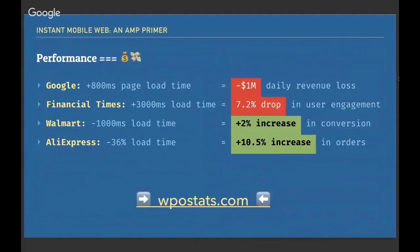Performance equals money. I encourage you to check out WPO stats for great case studies. Google ran an experiment increasing page load time by 800 milliseconds to load more search results, and saw a million-dollar daily revenue loss from that minor tweak. AliExpress, based in China, decreased their load time by 36% and saw an increase in orders — making a huge difference for users in emerging markets who previously couldn't access websites or mobile apps.